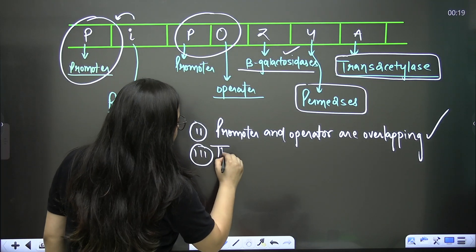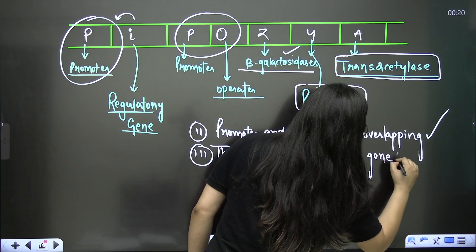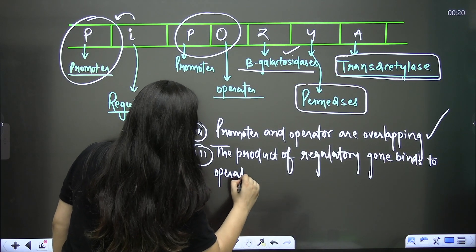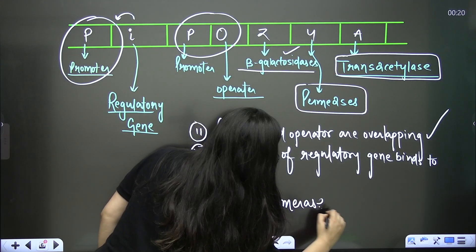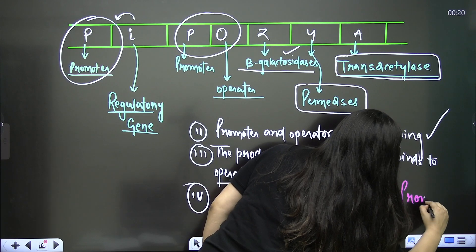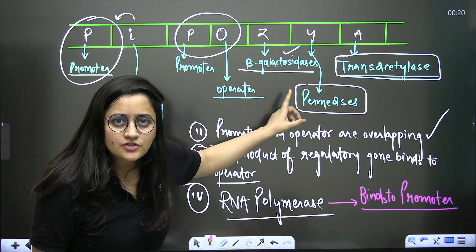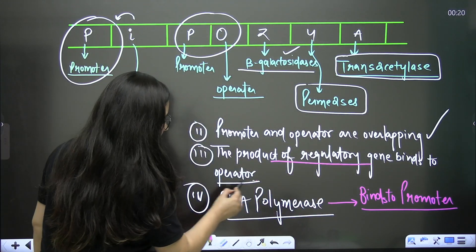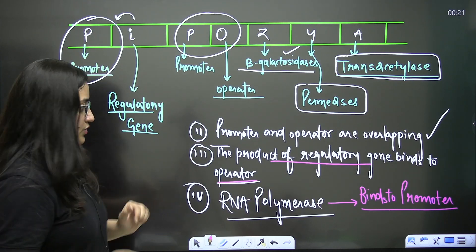Key points to remember: the product of the regulatory gene binds to the operator. RNA polymerase binds to the promoter. Questions can ask what gene Z, Y, or A produce, where the product of the regulatory gene binds, and where RNA polymerase binds. The lac operon switches on only when glucose is absent and lactose is present in the culture medium.